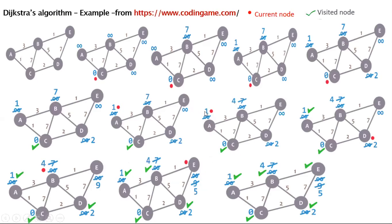Here is an example from the website codingame.com, which is very easy to follow. Here is the graph with the distances. Suppose we select initial vertex C, so we set its distance to zero and all other distances to infinity. Next, we update the distances of nodes connected to C: from C to B we have 7, since infinity is larger than 7 we replace it by 7; the cost to A is 1, less than infinity, so we replace it by 1; and the cost to D is 2, less than infinity, so we replace the distance of node D to 2.